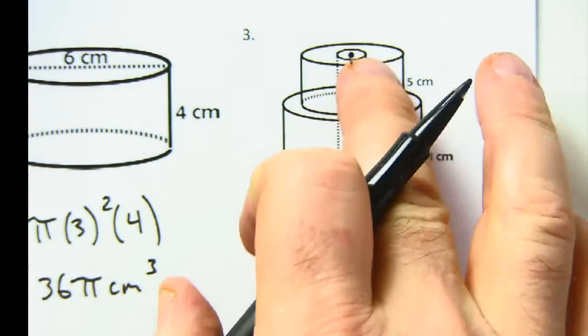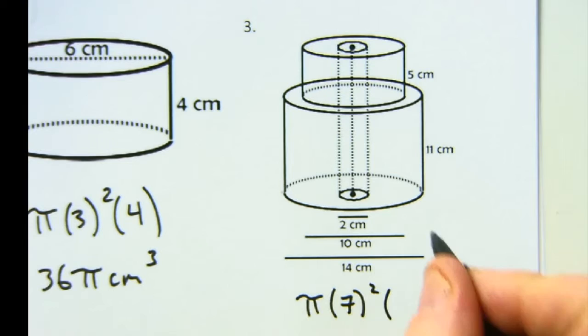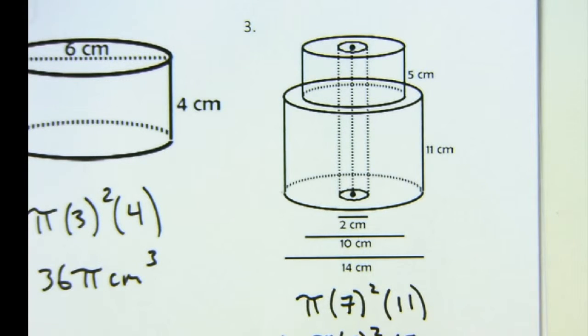Now we're getting into more interesting stuff. We've got two cylinders and then we've got a hole right through the middle. So let's do the two cylinders first. Let's do the guy on the top there, and the guy on the bottom. Pi r squared h plus pi r squared h minus pi r squared h.